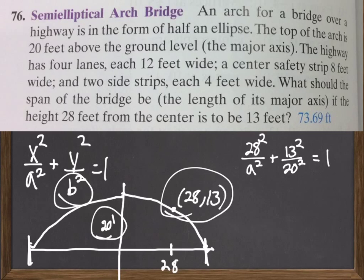So, we just solved that equation for a. And when I did that, I get 28 squared over a squared was equal to 0.5775. I did that by taking 13 squared over 20 squared, subtracted that from 1.